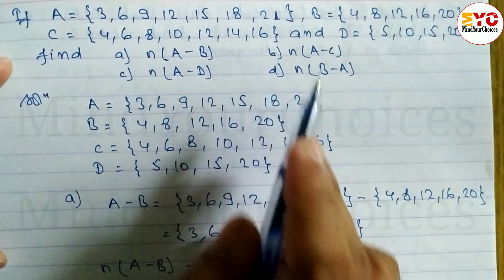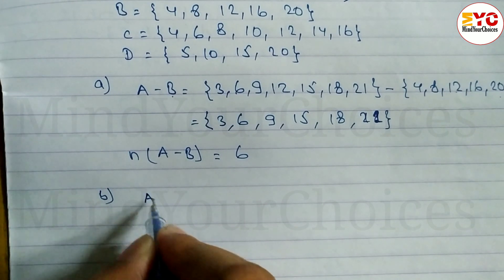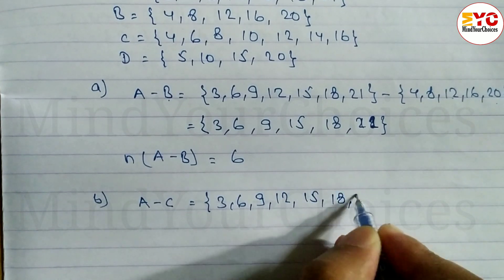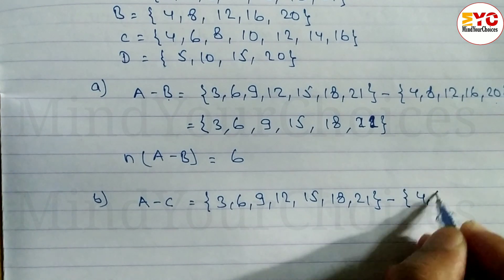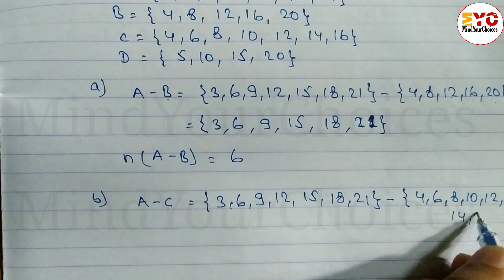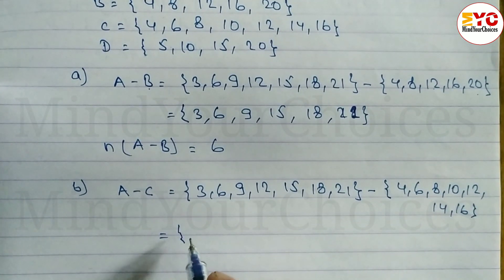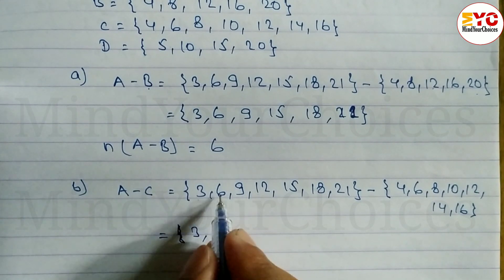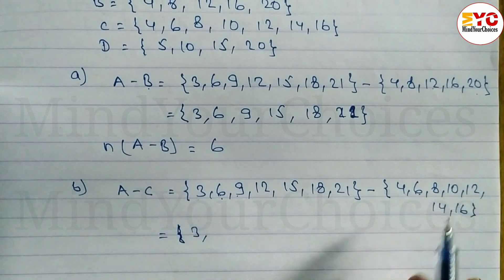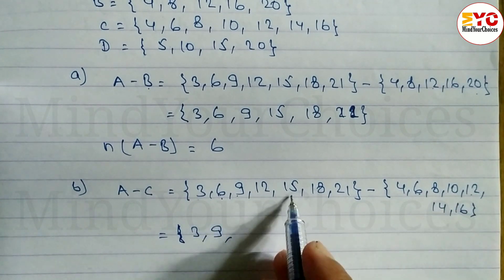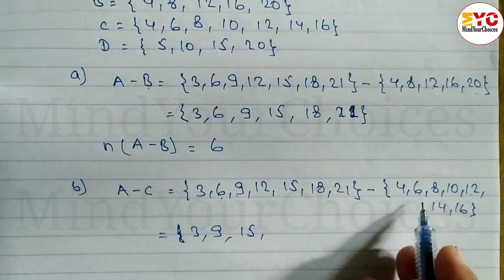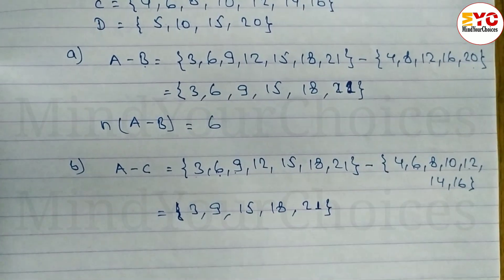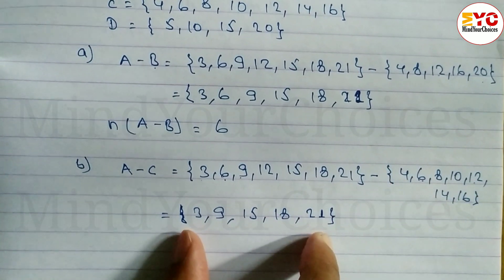Similarly, let's find A minus C and then its cardinality. Set A is {3, 6, 9, 12, 15, 18, 21} minus set C which is {4, 6, 8, 10, 12, 14, 16}. Three is not in C, so write 3. Six is in C, so six and six cancel. Nine is not in C, so write 9. Twelve is in C, so cancelled. Fifteen is not in C, so write 15. Eighteen is not in C, so write 18. Twenty-one is not in C, so write 21.